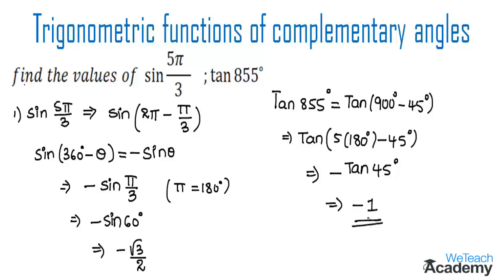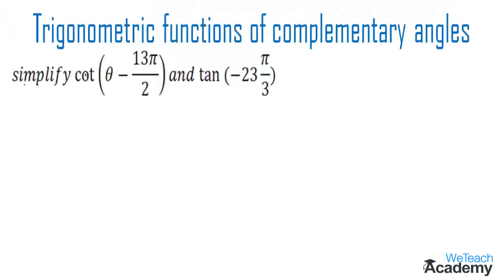Now let us proceed and discuss one more example. The given example asks us to simplify cot(θ − 13π/2) and also simplify tan(−23π/3). First let us consider cot(θ − 13π/2).